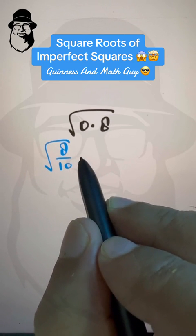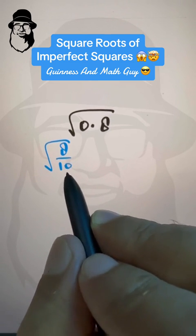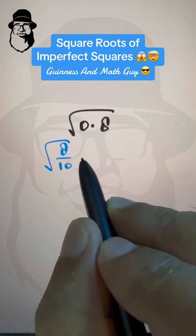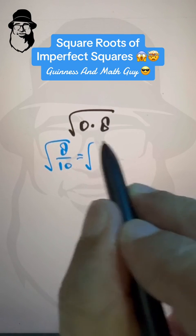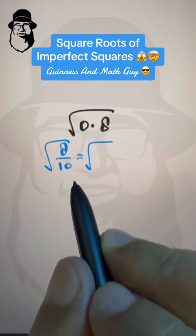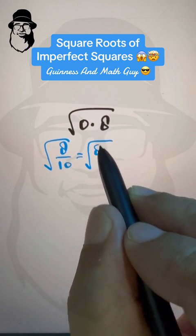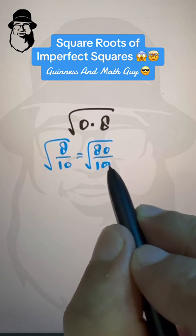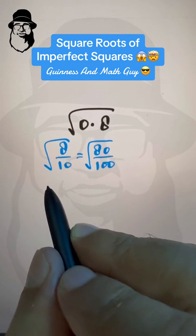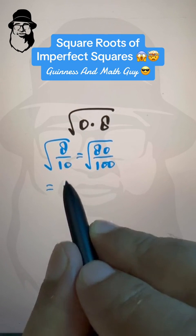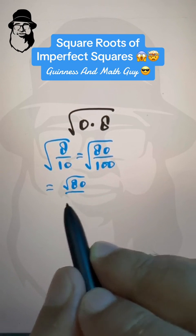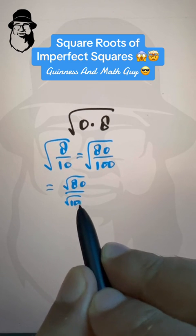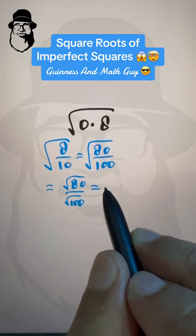Square root of 8 over 10. Now, I want to make this 10 as perfect square. What I can do is multiply the numerator and the denominator both by 10 to get 80 over 100.